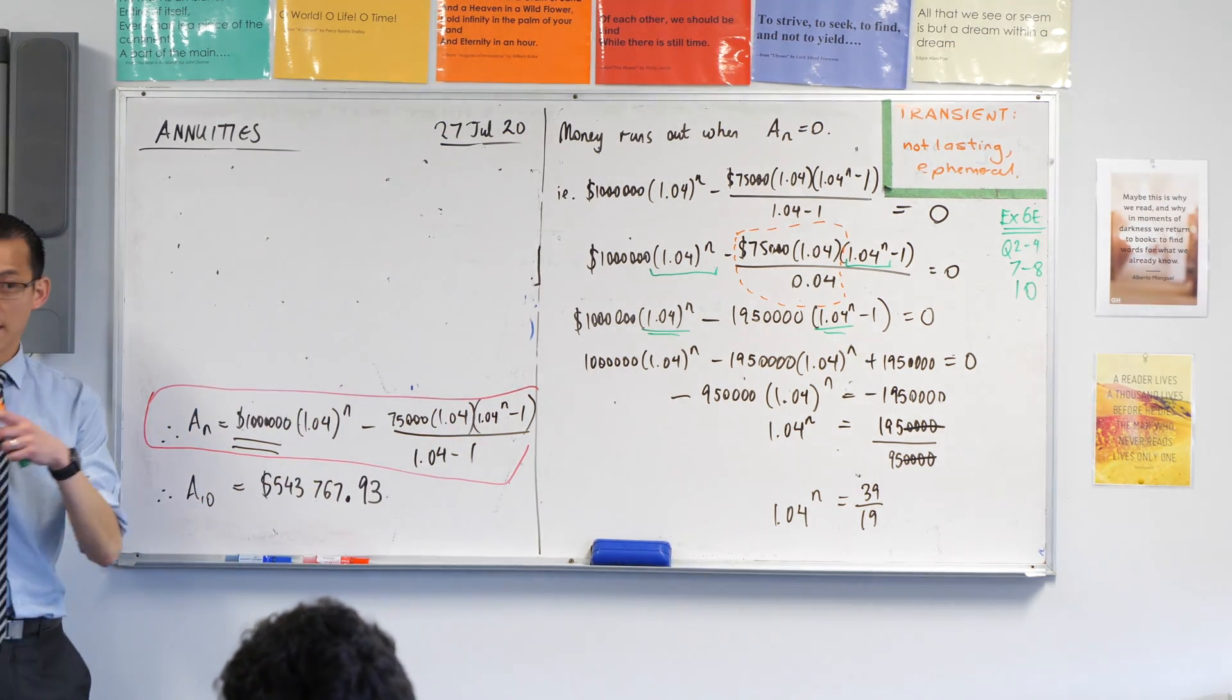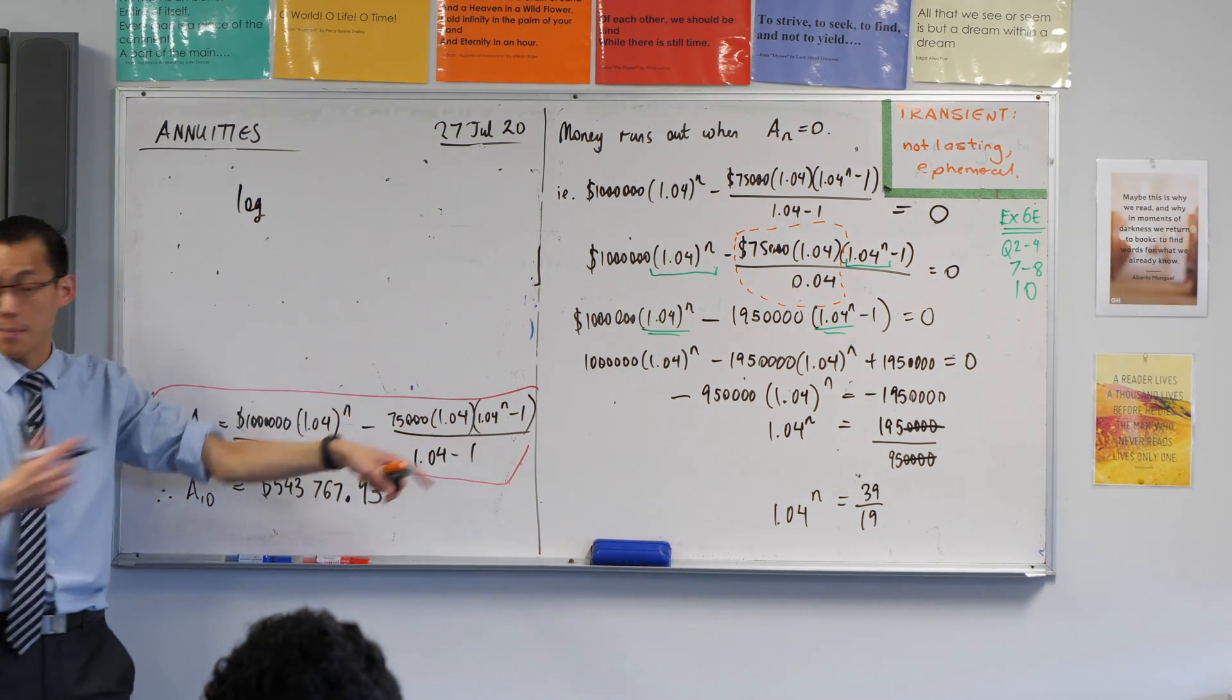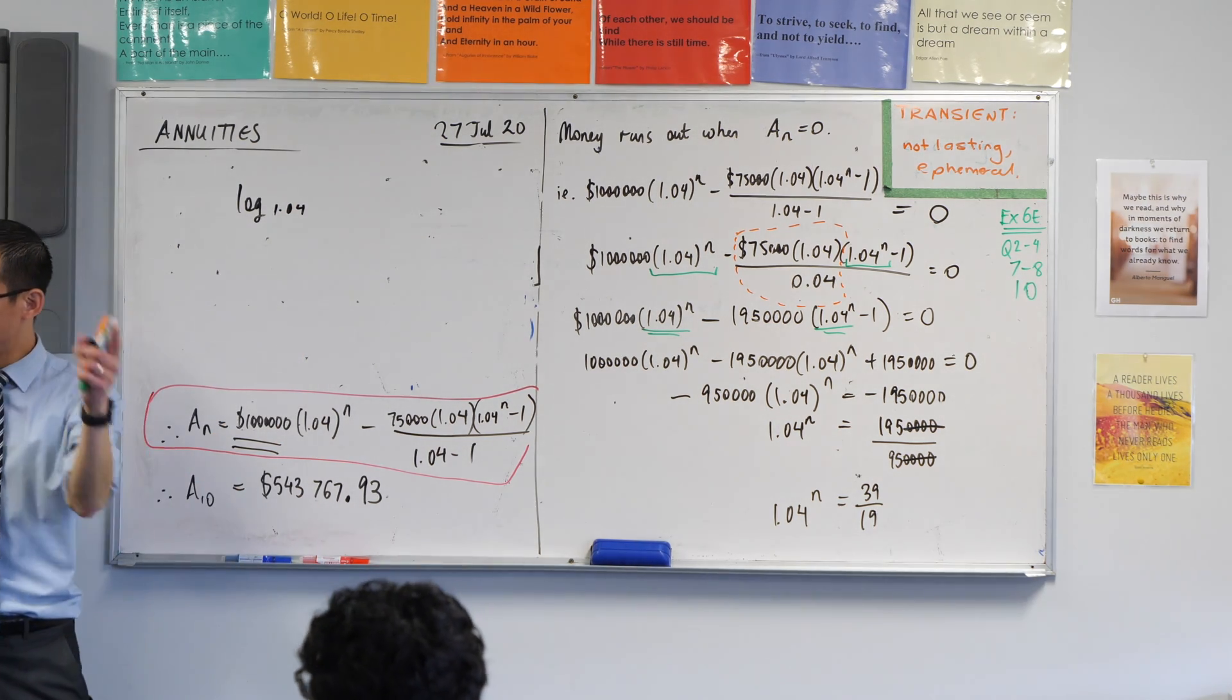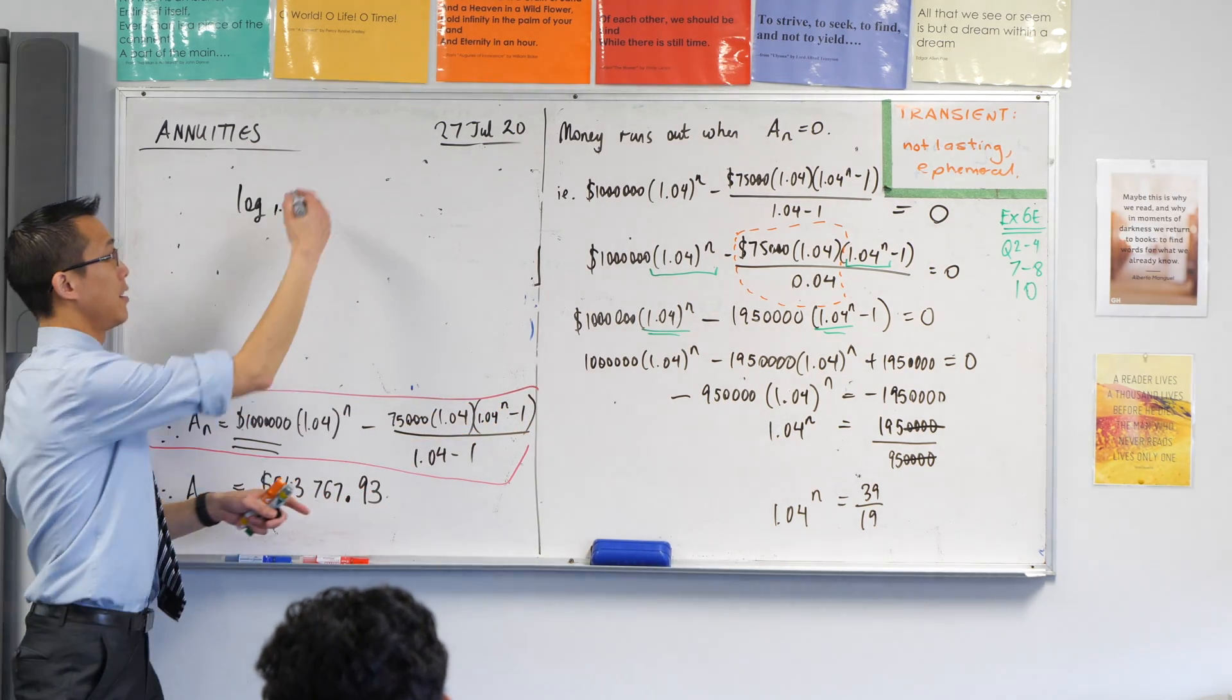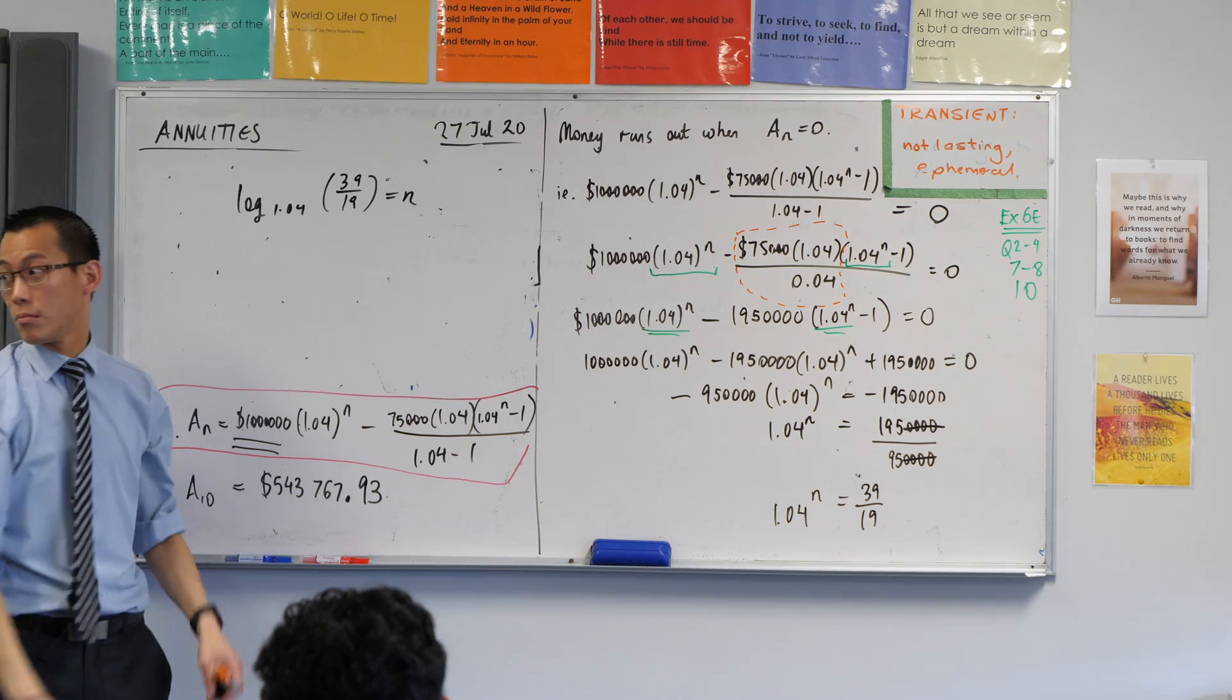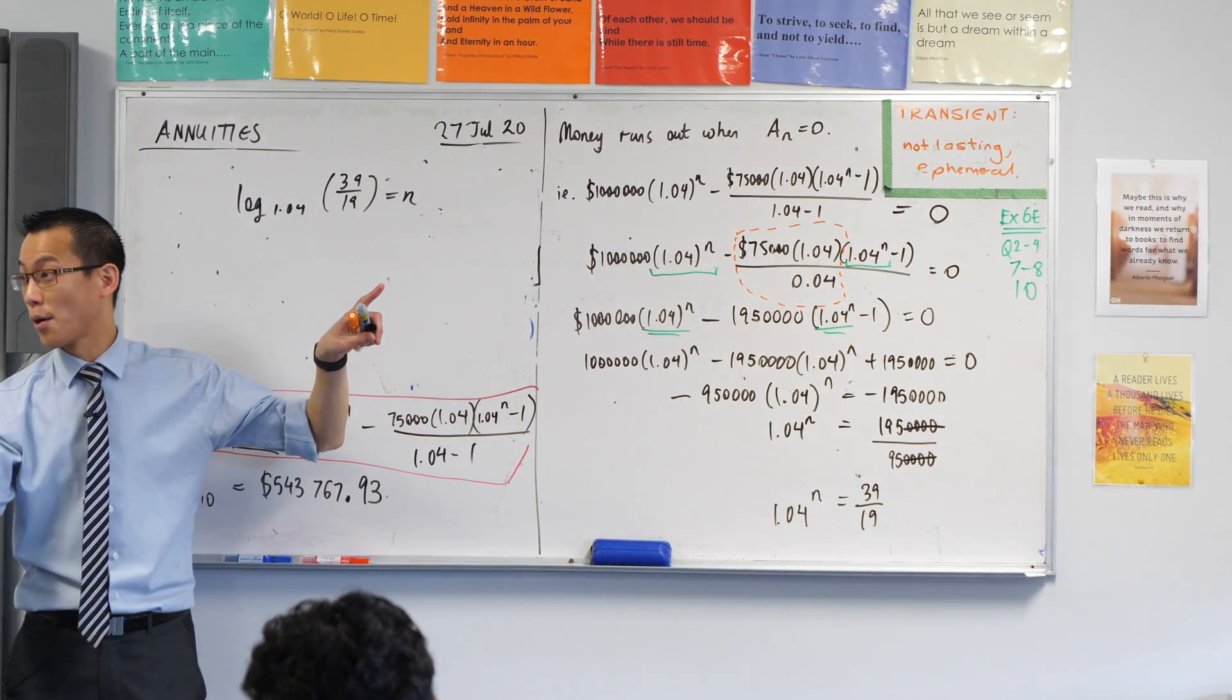So I'm going to take log. Yeah, the base over there becomes the base. 1.04. Right? And then everything else rearranges. So I'm going to get 39 on 19 inside of this log. 39 on 19. That should be n. Right? You're going to need your log laws to deal with this because your calculator doesn't have base 1.04. It's only got base e and base 10.